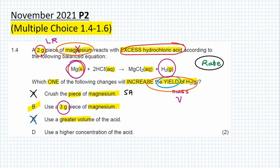If we look at D, it says use a higher concentration of acid. Concentration means more particles per unit volume. So although we may end up with more hydrochloric acid, the hydrochloric acid is already in excess. That is why D is incorrect, making B the only correct option for this question.